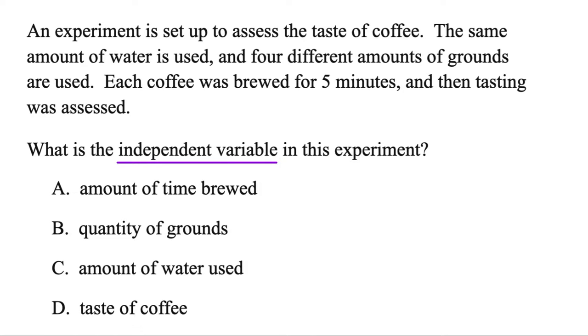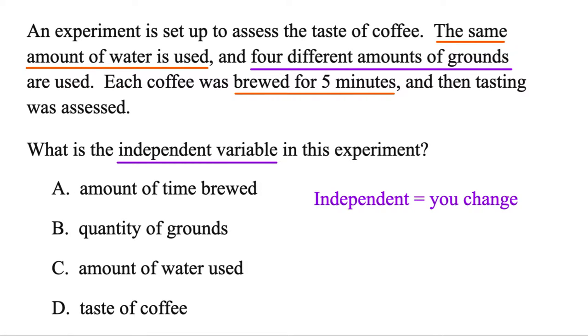The independent variable in an experiment is always the one that you control and you change. Now in this example, the only thing we're actually changing is the amount of grounds that we use. Because we're using the same amount of water each time, we're brewing the coffee the same amount of time, and then we're tasting it. But the only thing we actually changed was the quantity of grounds. So that makes that the independent variable here.